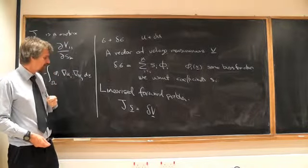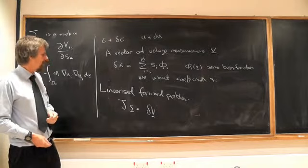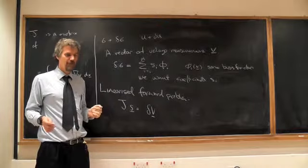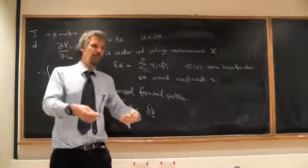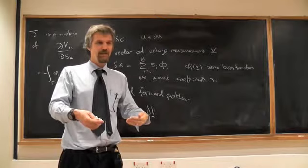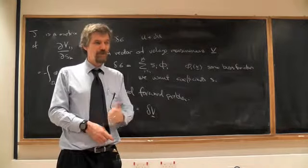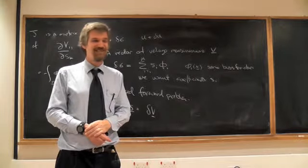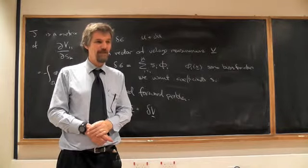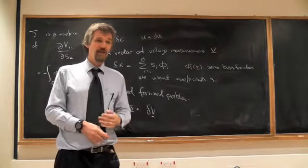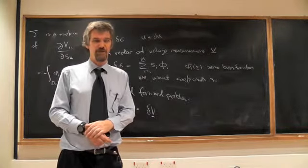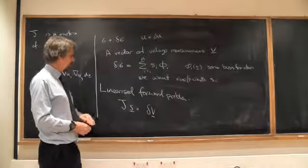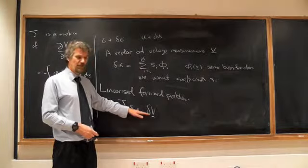In principle, the idea is that we solve it, we update sigma, and now we've got a new best guess for sigma, and then we can solve a forward problem to predict the voltage we would get, and then compare them with the measurements and update the conductivity again. So essentially, this is Newton's method. We repeatedly solve the linear problem, update it until our voltages fit the measured voltages. So that's the general scheme of things, but in particular, we're going to solve this linear system.